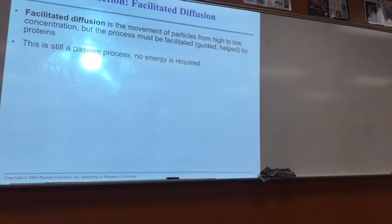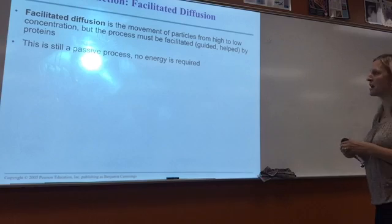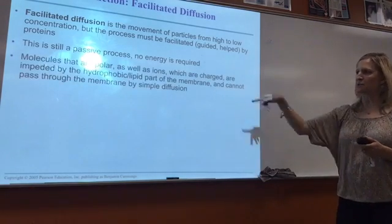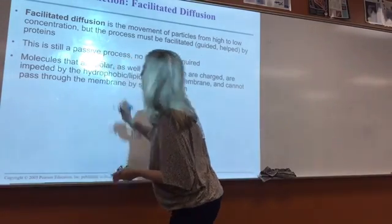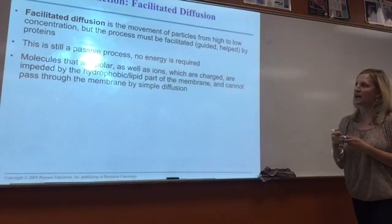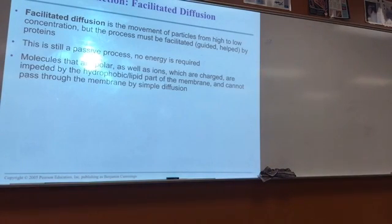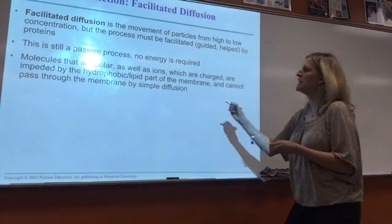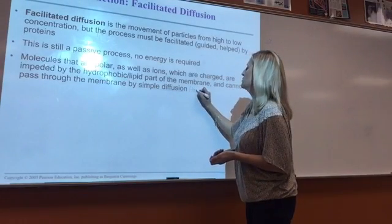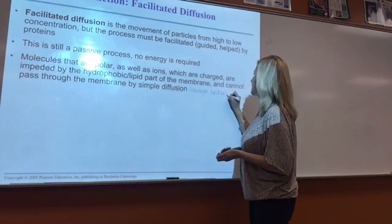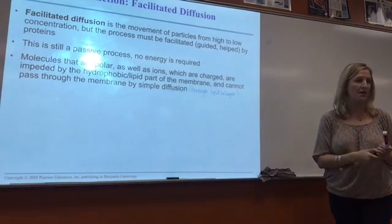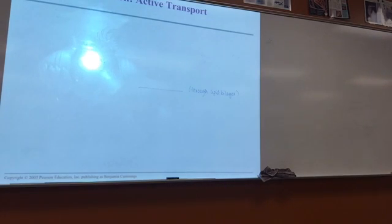Otherwise those molecules wouldn't diffuse from high to low. This is still just like regular diffusion — a passive process — no extra energy is required. Molecules that are large and polar, as well as ions, are impeded by the hydrophobic lipid part of the membrane and can't pass through by simple diffusion. Simple diffusion means through the lipid bilayer. So these molecules can't go through the lipid bilayer and have to go through a protein.